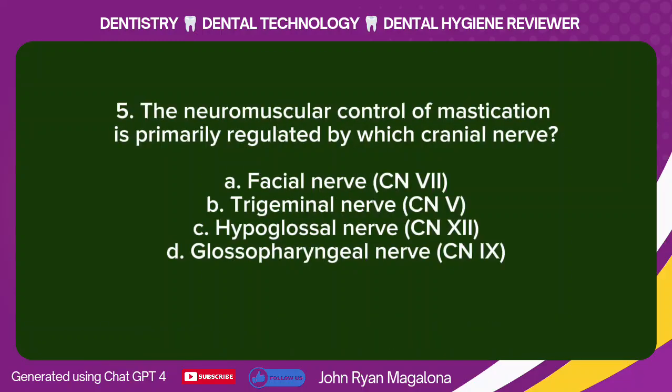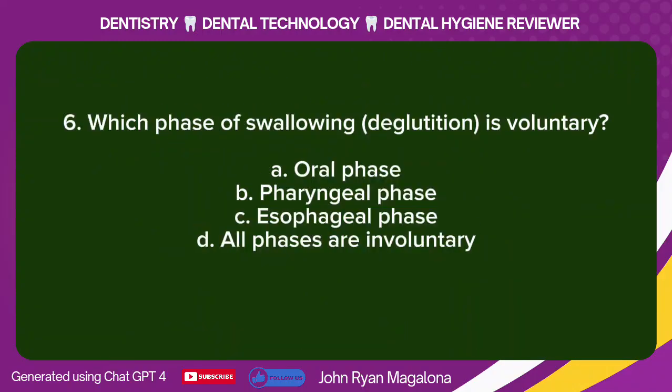Question 5: The neuromuscular control of mastication is primarily regulated by which cranial nerve? A. Facial nerve, CN7. B. Trigeminal nerve, CNV. C. Hypoglossal nerve, CN12. D. Glossopharyngeal nerve, CN9. Answer: B. Trigeminal nerve.